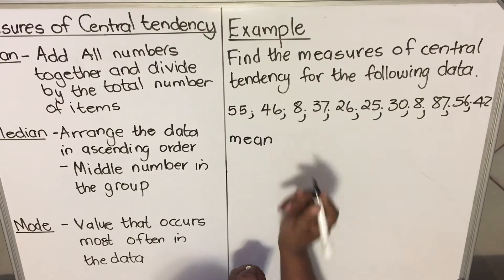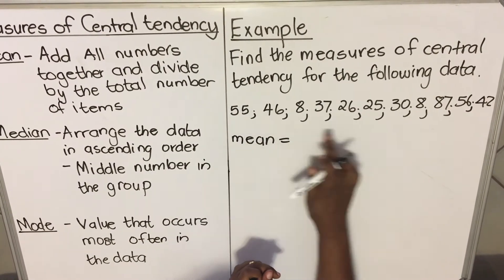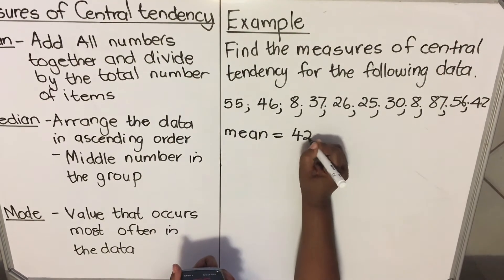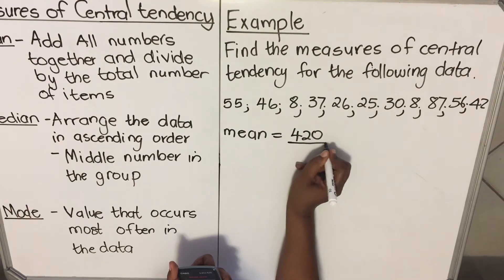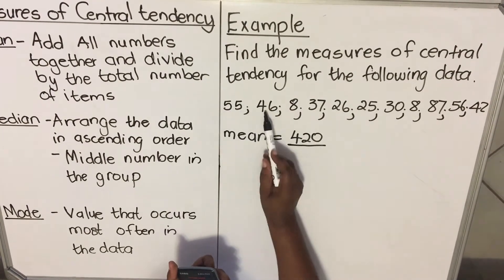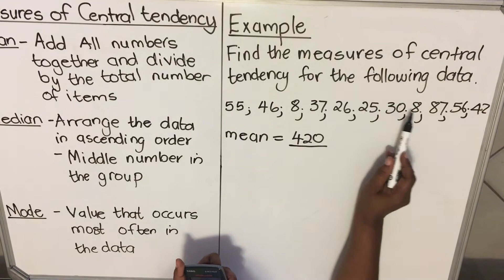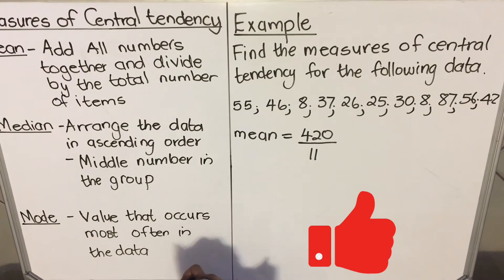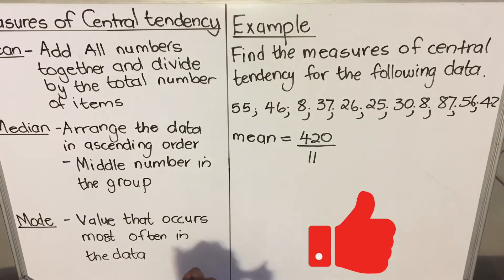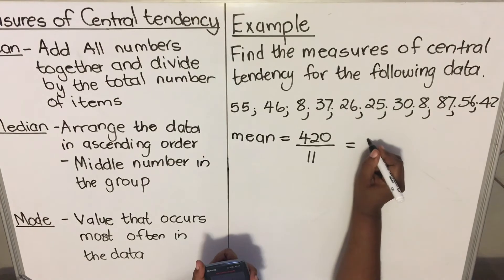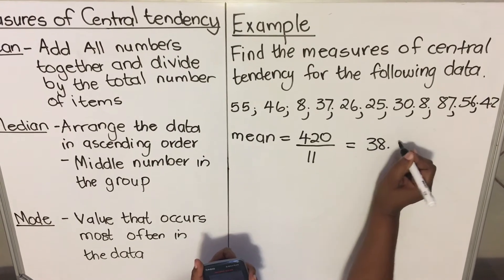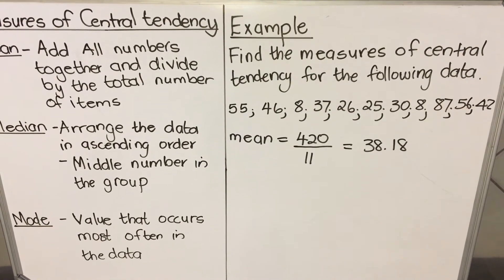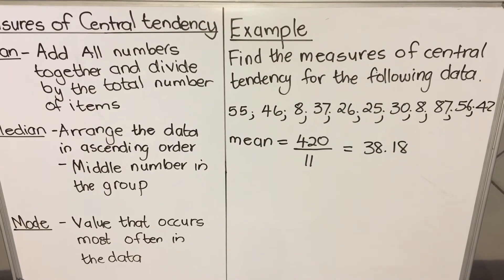With your mean, take your calculator and add all of them. When you add all of them, you get 420. Then you're going to divide by the number of items. How many are there? 1, 2, 3, 4, 5, 6, 7, 8, 9, 10, 11 — so divide by 11. Your answer is 38.18. So this is your mean, or the other name they use is average.